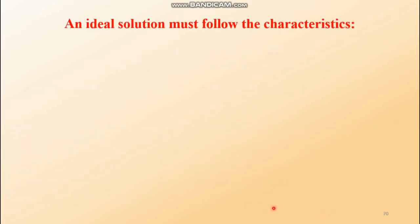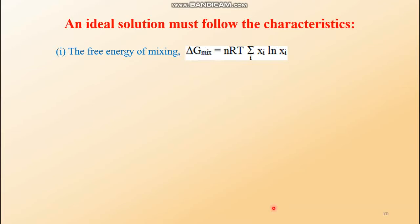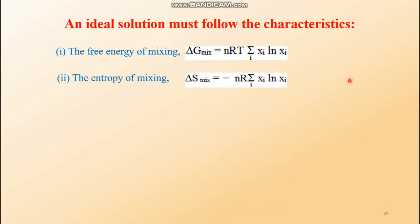Ideal solutions must follow certain characteristics. The free energy of mixing must follow the rule: ΔG_mix = RT × sum over i of (xi ln xi). This equation applies for ideal solutions; for real solutions this rule is sometimes not maintained. Similarly, the entropy of mixing is: ΔS_mix = -nR × sum over i of (xi ln xi), which was derived in the previous class.